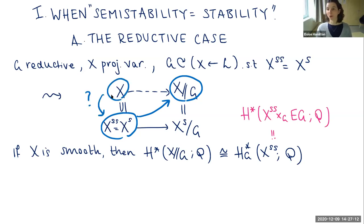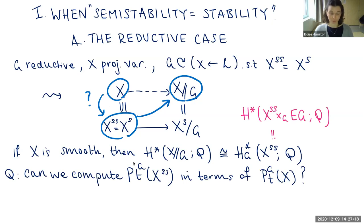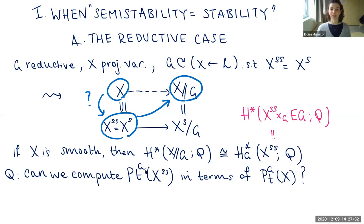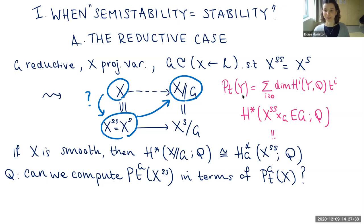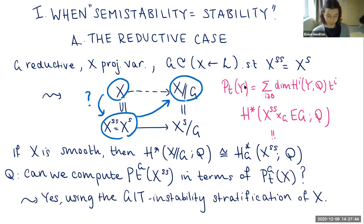The question is: how can we work it out knowing only the cohomology of X? Throughout this talk I'll focus on the Poincaré series, which encodes the Betti numbers. The question is whether we can compute the equivariant Poincaré series for the semi-stable locus in terms of the equivariant Poincaré series for X. The answer is yes — we can do this calculation using the GIT instability stratification of X.